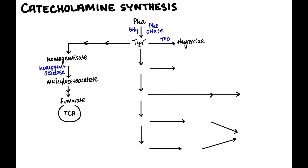Tyrosine can also be converted into DOPA, which is really the big precursor for catecholamines. The enzyme that does this is tyrosine hydroxylase, and that also uses tetrahydrobiopterin as a cofactor. Now DOPA doesn't really do anything on its own, but it can be converted to melanin — and the enzyme that does this is called tyrosinase. So where we get melanin is from the conversion of DOPA through tyrosinase into melanin.